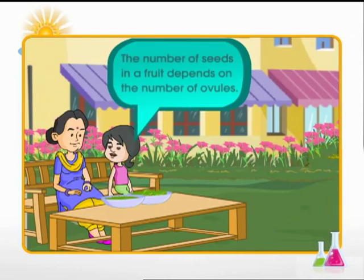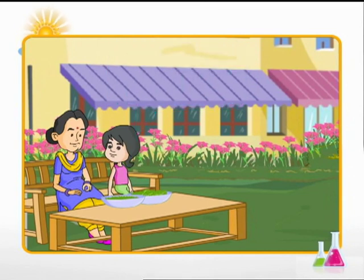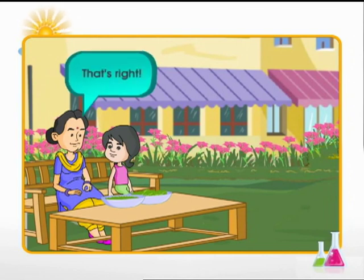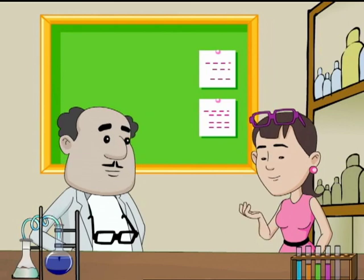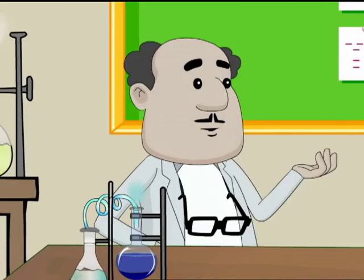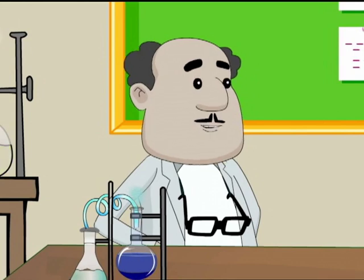Now the little girl understands why some fruits have only one seed and others have many — it depends on the number of ovules. That's right, says mother. That was interesting! Thanks, Binnie. Well, I forgot to tell you, I have passes for a science seminar tomorrow, and this time you surely have to come.